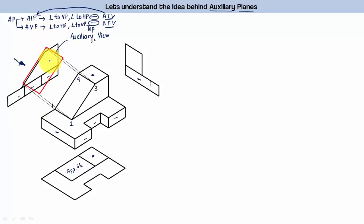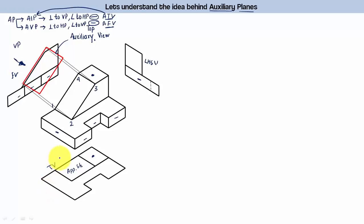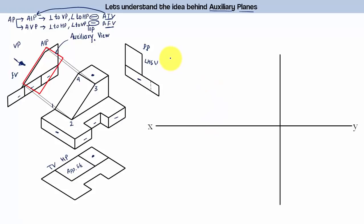So there are basically two types of auxiliary planes — AIP and AVP. AIP gives the auxiliary top view; AVP gives the auxiliary front view. To recap: front view is obtained in the vertical plane, top view in the horizontal plane, side view in the profile plane, and auxiliary top view in the auxiliary inclined plane. That's the entire idea — sometimes the true shape and size of a profile won't be visible in the front, top, or side view, and that's where the auxiliary plane is used. Now let's understand how to do this on a drawing sheet.